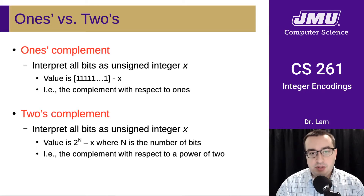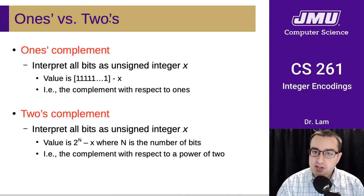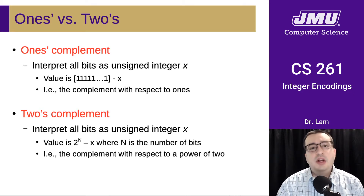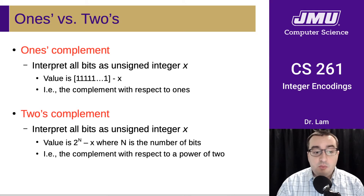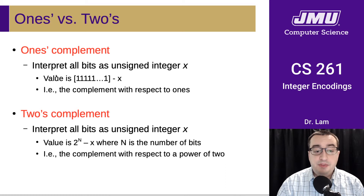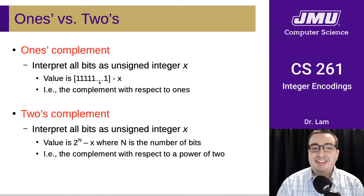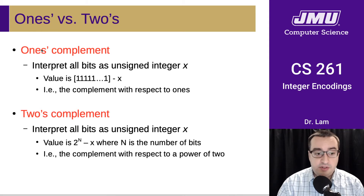Quick caveat at this point. You may have noticed that the apostrophe is in a different place in one's versus two's complement. That's not immediately apparent when you're speaking the names of the representations, but it is apparent when you write them down. There is actually a meaning to this. In one's complement, we take the unsigned integer value and, in order to negate it, we take the complement with respect to all ones — so this is multiple ones, which means in English you form the possessive by adding the apostrophe at the end after the S.